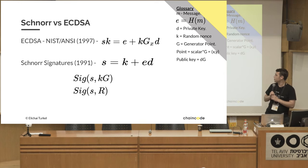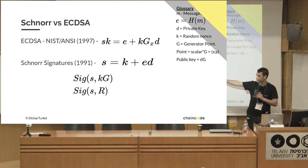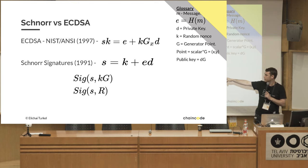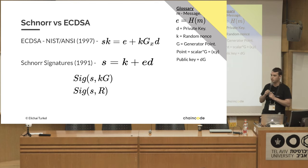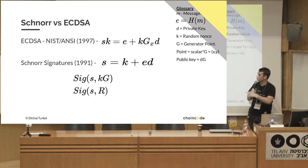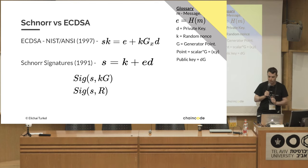The actual signature is S, the scalar, and K times G which is the point of the nonce, which we'll call R.